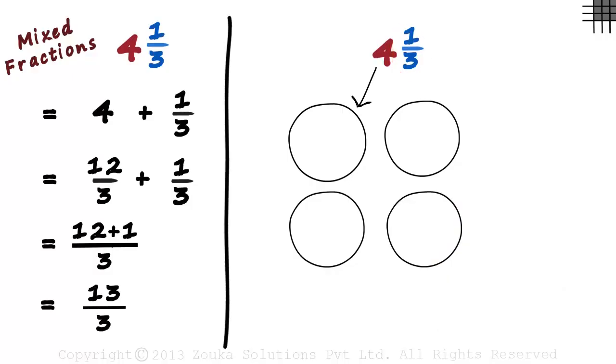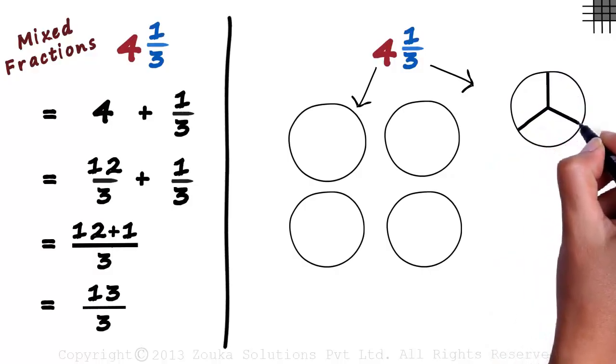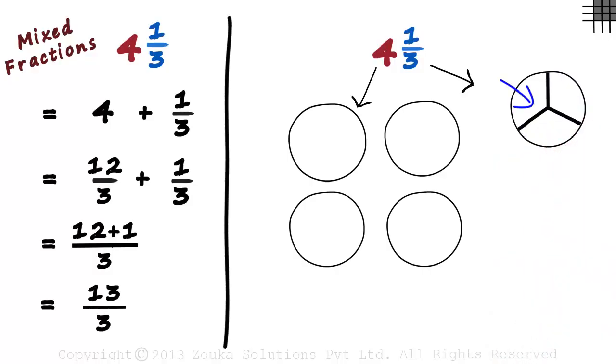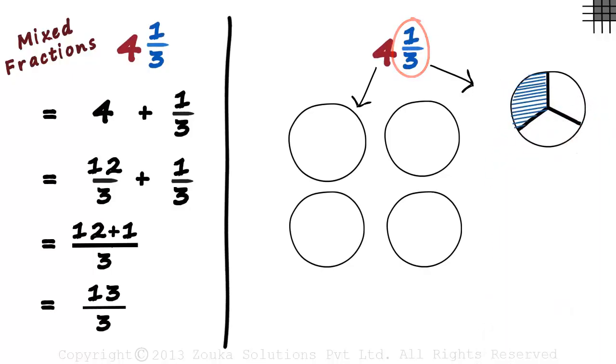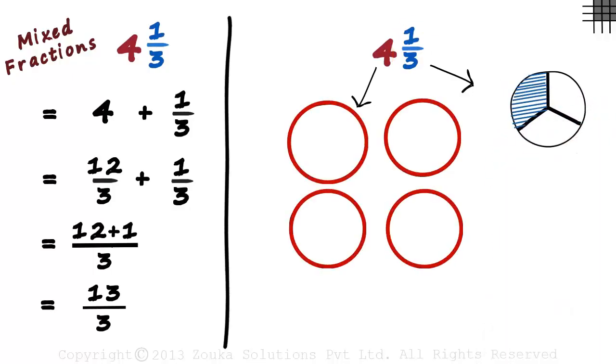The fractional part is 1 divided into 3 equal parts. So for 1 by 3, we draw one circle and divide it into 3 equal parts. It's one part out of these three parts. Now let's shade one part to represent 1 by 3. Now we have 4 plus 1 by 3.